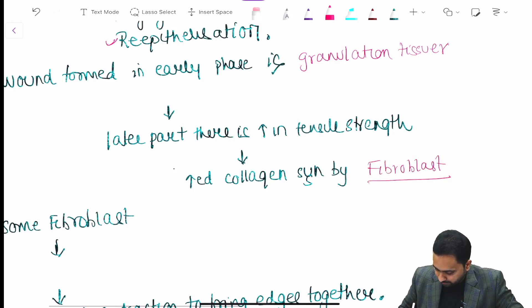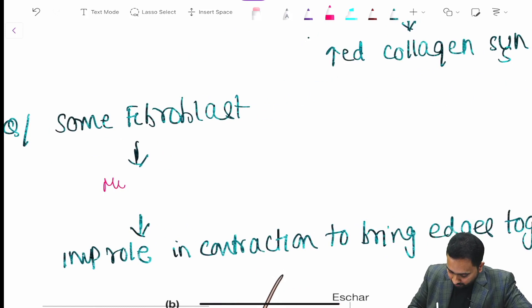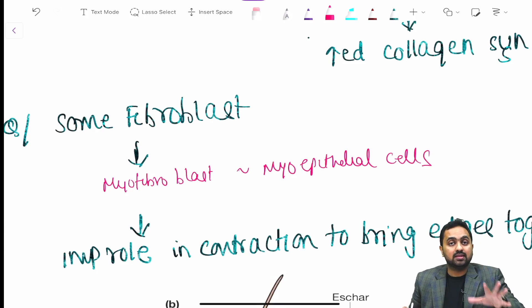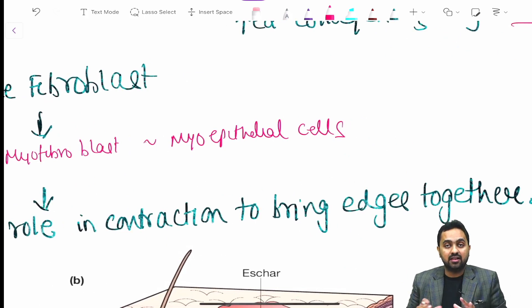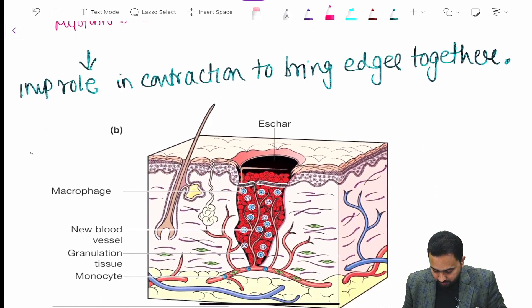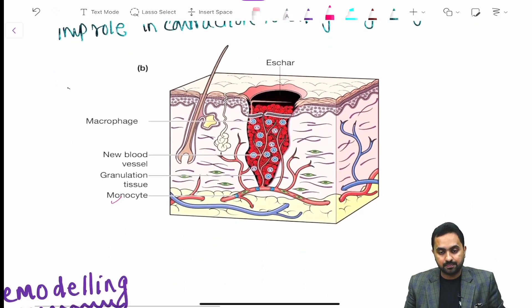Later part there is an increase in your tensile strength by the increased collagen synthesis by your fibroblast. Then some fibroblast may differentiate into your myofibroblast which consists of your myoepithelial cells. This myoepithelial cells have an important role in contraction to bring the edges of the wound together. If we look at this diagram over here, we have the new blood vessel formation and your granulation tissue and the monocyte cells which differentiate into your macrophages.